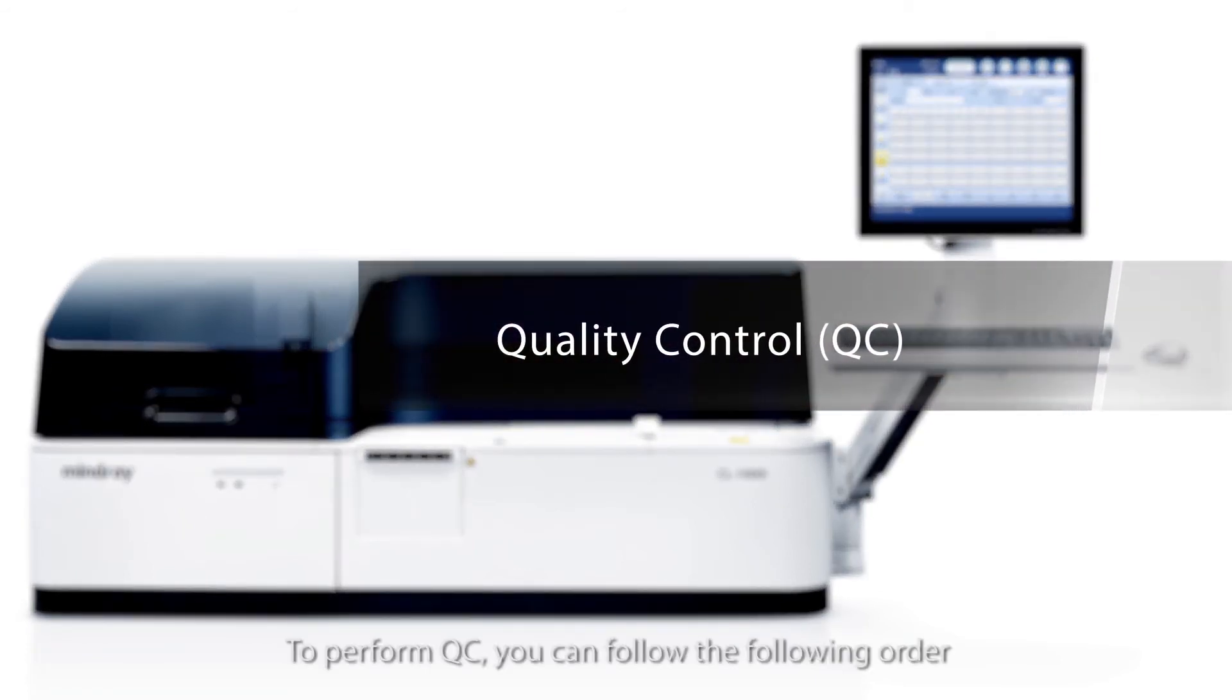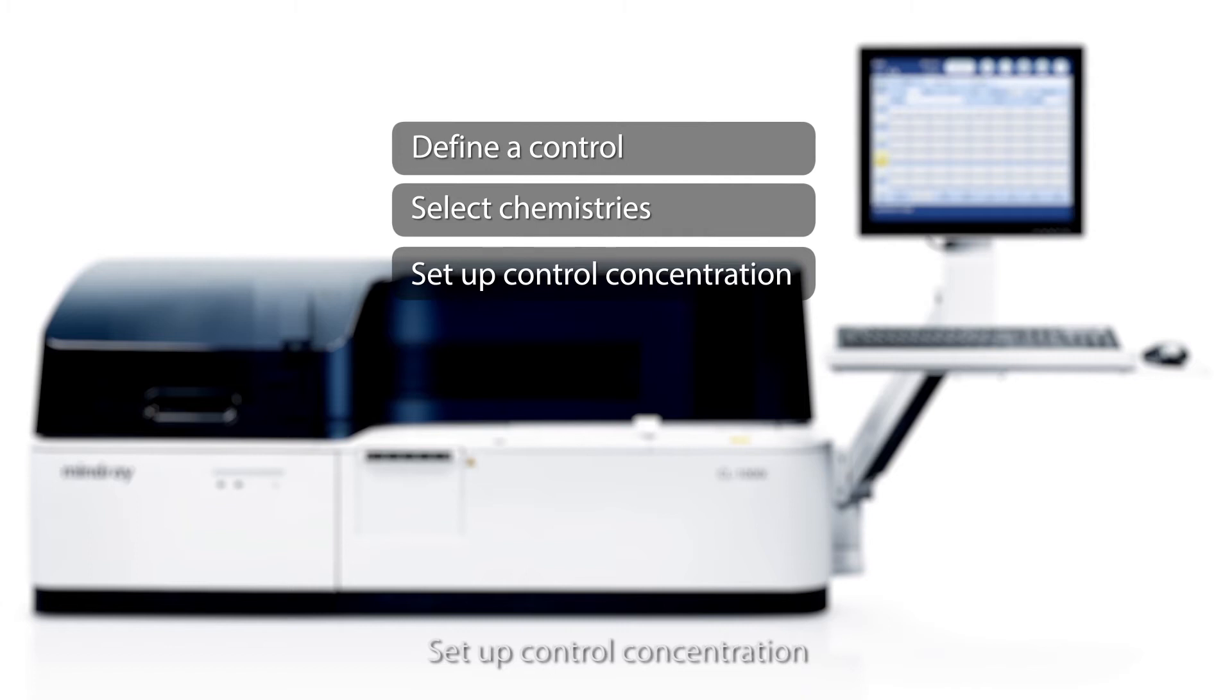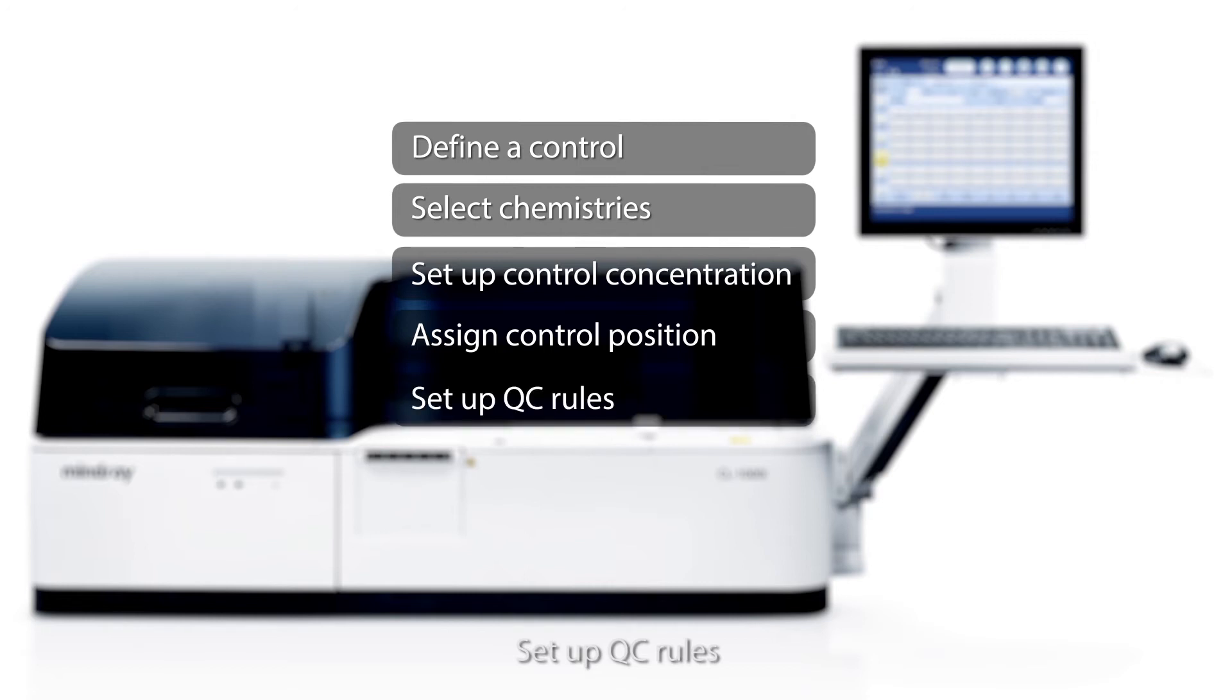To perform QC, you can follow the following order: define a control, select chemistries, set up control concentration, assign control position, set up QC rules, run QC, check QC results.